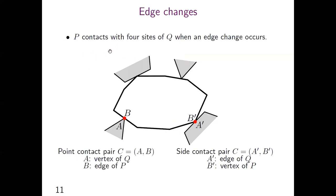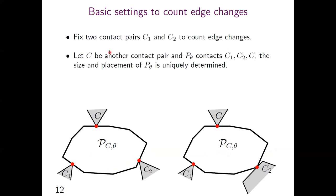Before explaining how to count the edge changes, I will mention some basic notations and settings. We call a pair of a vertex of Q and a vertex of P a side contact pair. We call a pair of a vertex of Q and an edge of P a point contact pair. We contact with four sides of Q when an edge change occurs. We fix two contact pairs and count the changes containing those two contact pairs, then add up the number of changes for all choices of two fixed contact pairs.